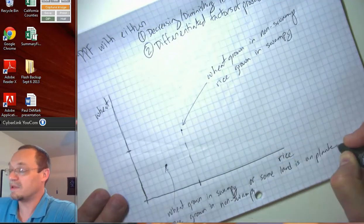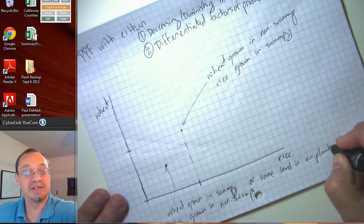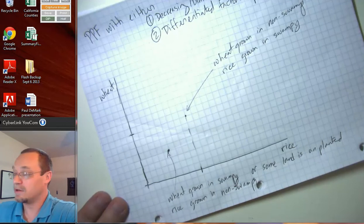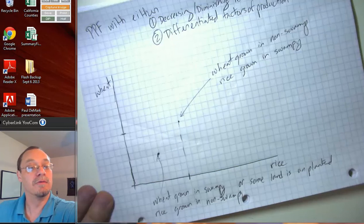It could be also that some land is unplanted. So if we just let some factors of production sit idle, some workers are unemployed or something like that, that's going to produce a situation where we're underperforming relative to our potential.